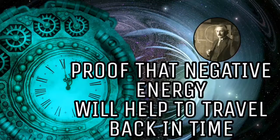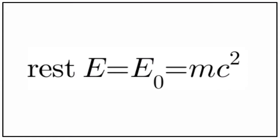In this video I will provide a mathematical proof that on applying negative energy you would travel back in time. So let's start with the mathematical equations. You know the rest energy is equal to mc squared, but when the object is moving with velocity v, then the moving energy is as follows.